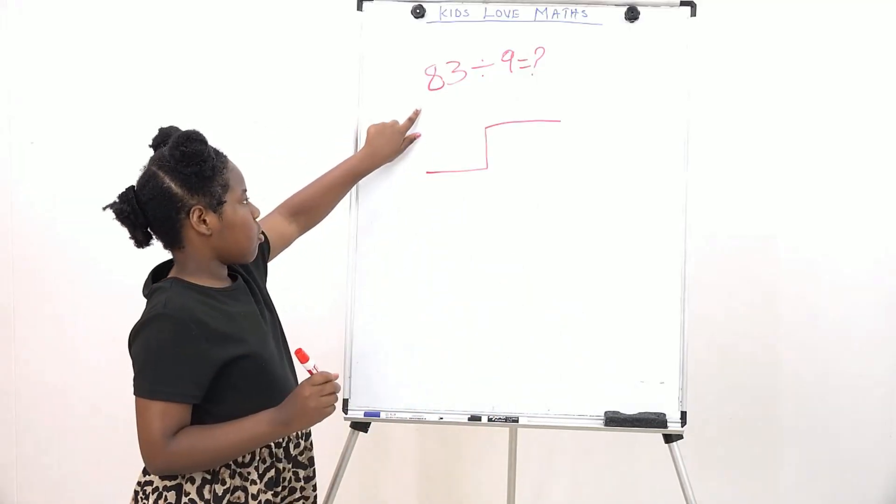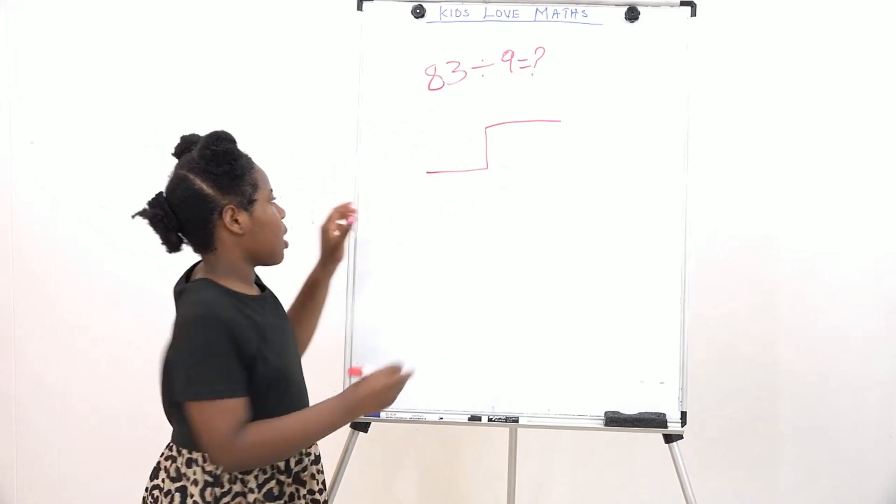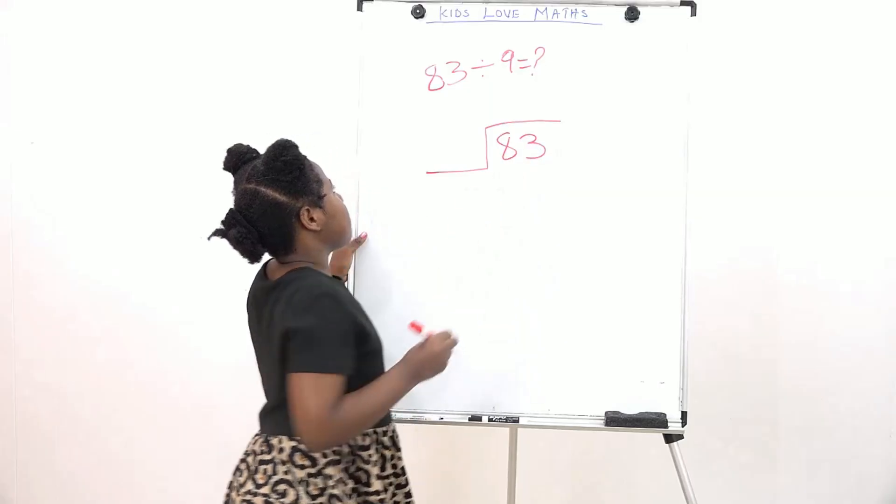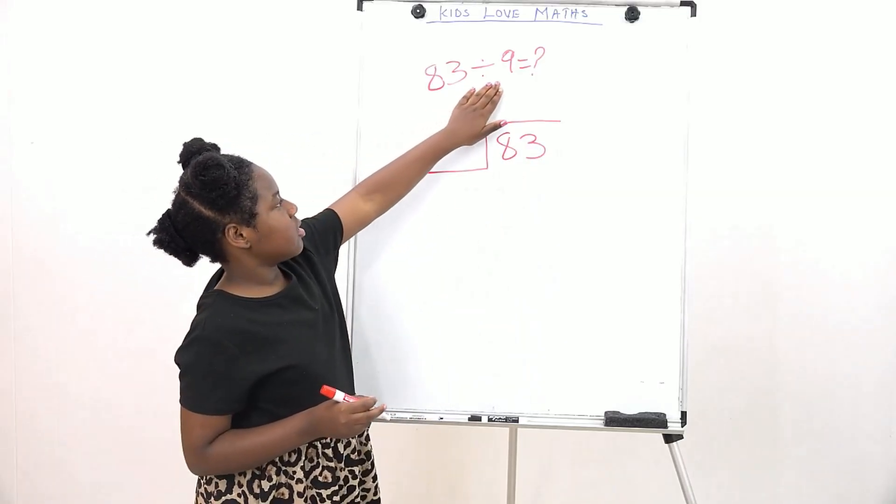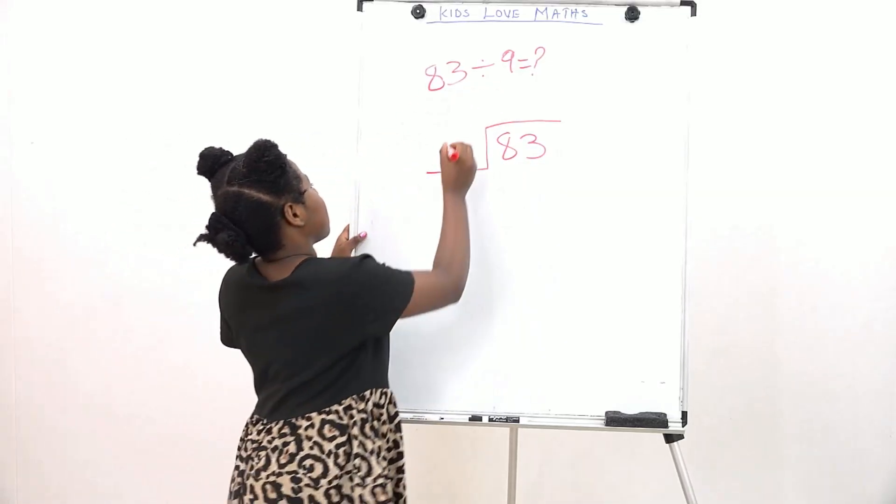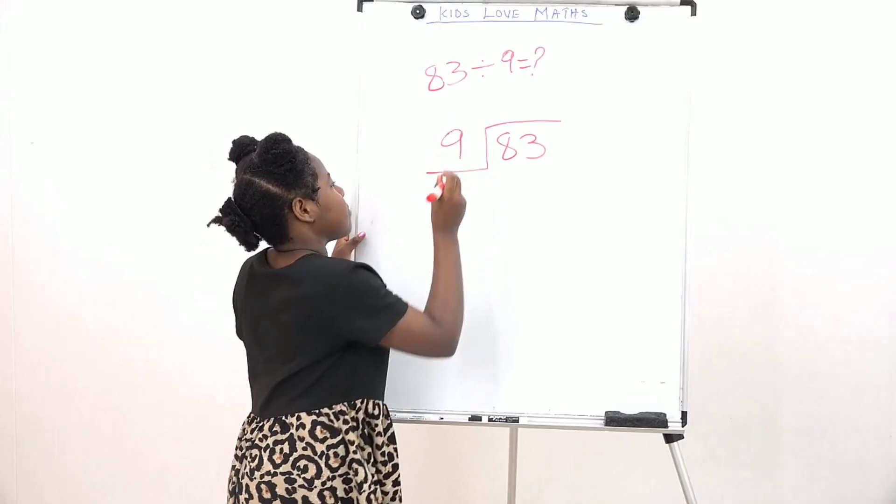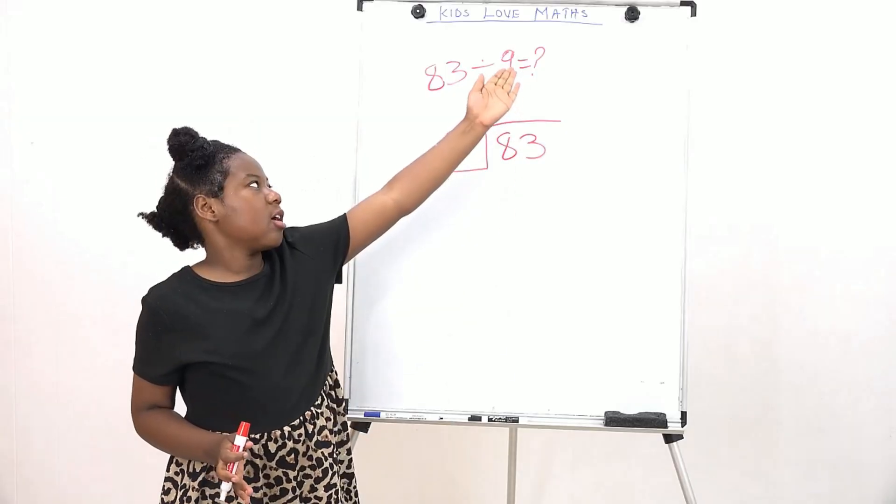The divider would go into the divider spot. Then the divisor would go over here. And the quotient, as you know, would go on the top here.